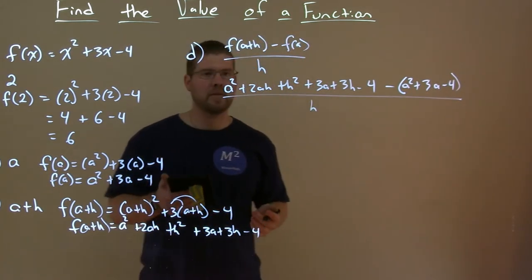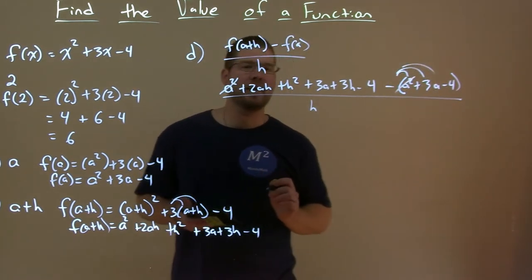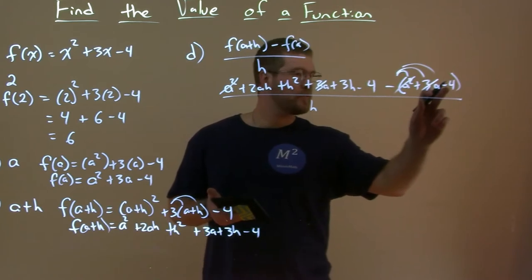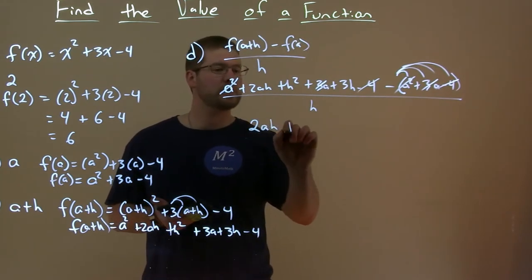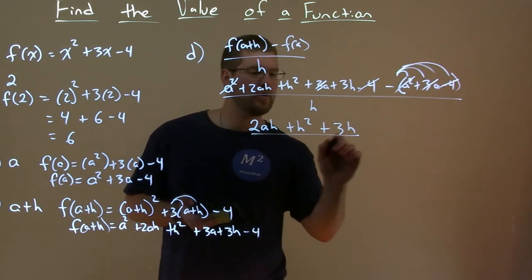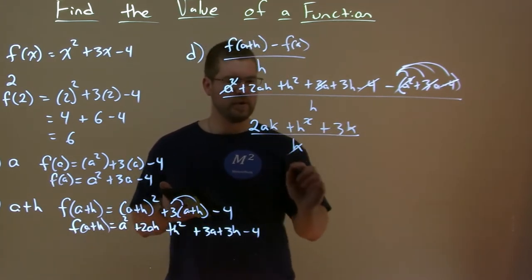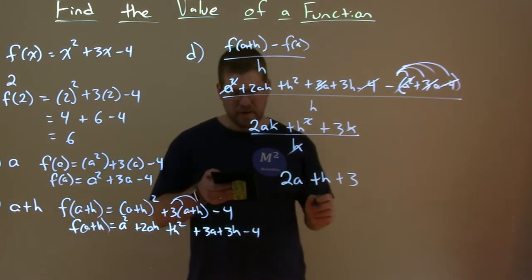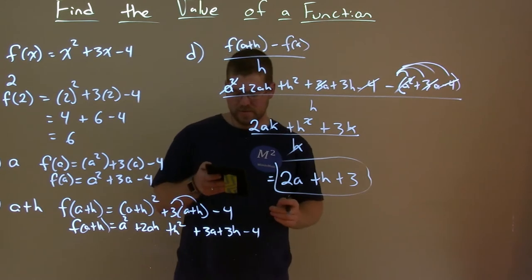Let's see what we can cancel. We distribute the minus to all parts: a squared cancels with minus a squared, 3a and minus 3a cancel, minus 4 and minus another minus 4 cancel. In the numerator we're left with 2ah plus h squared plus 3h, all over h. Notice h is in every part, so we can cancel out one h from each part, leaving us with 2a plus h plus 3.